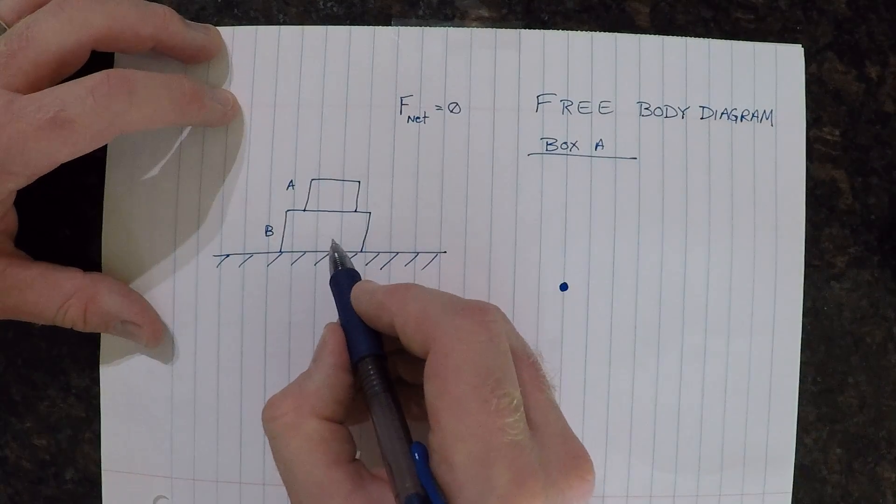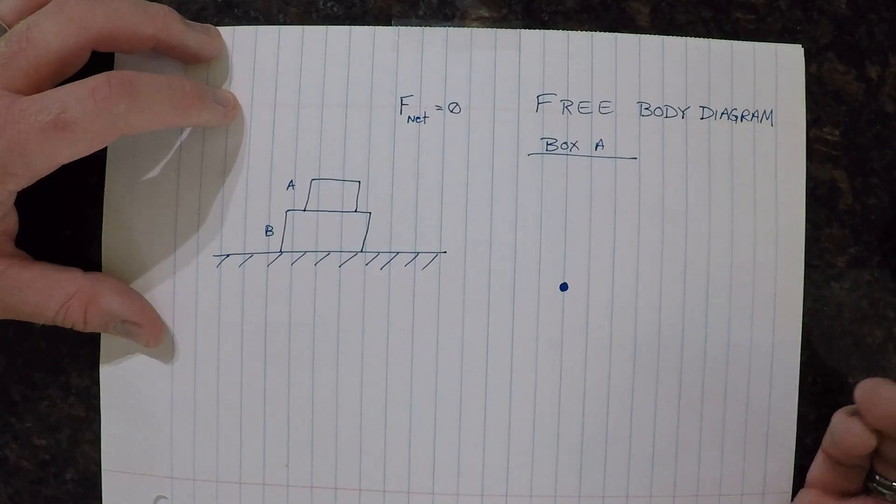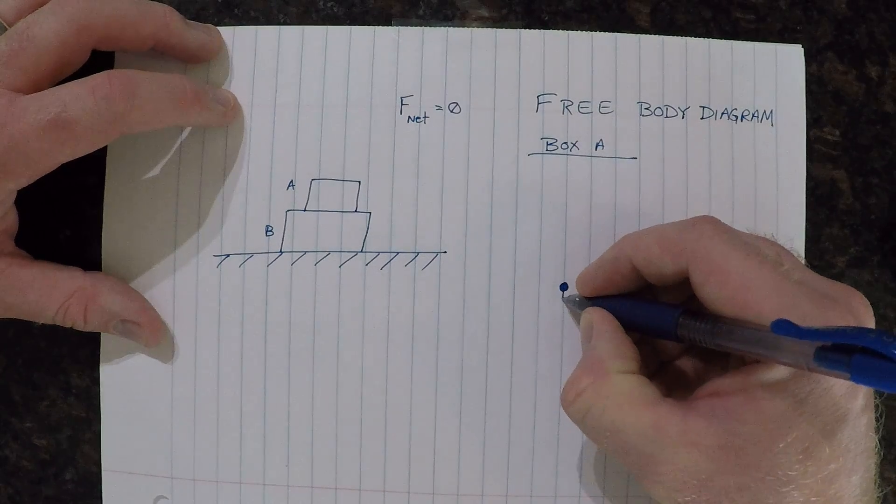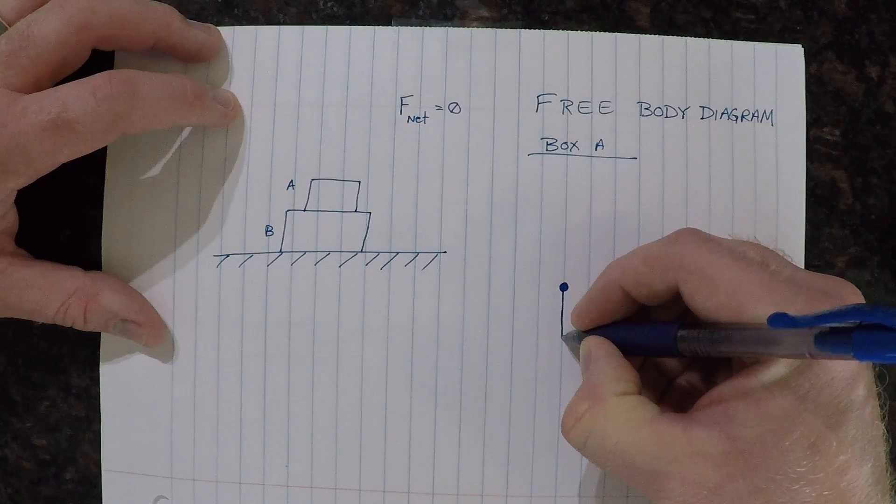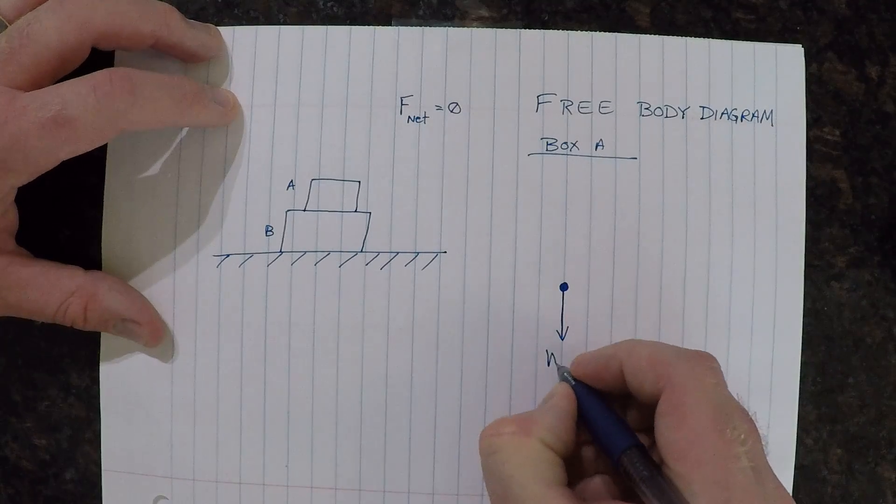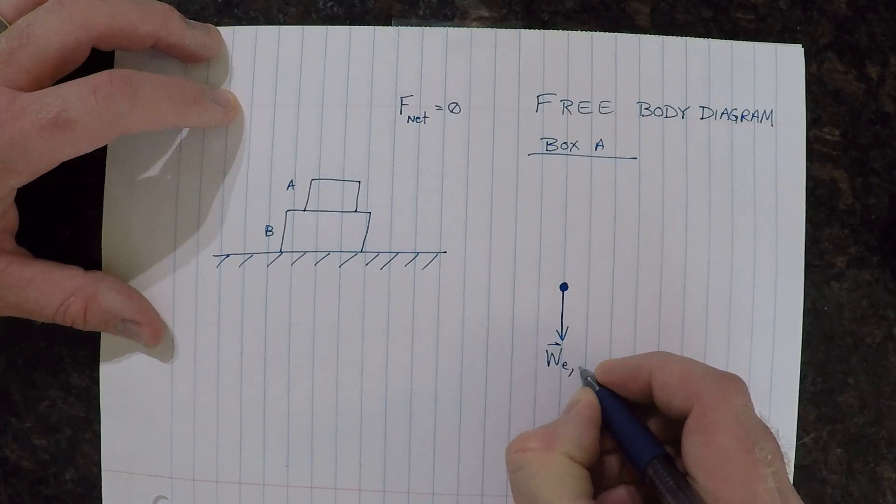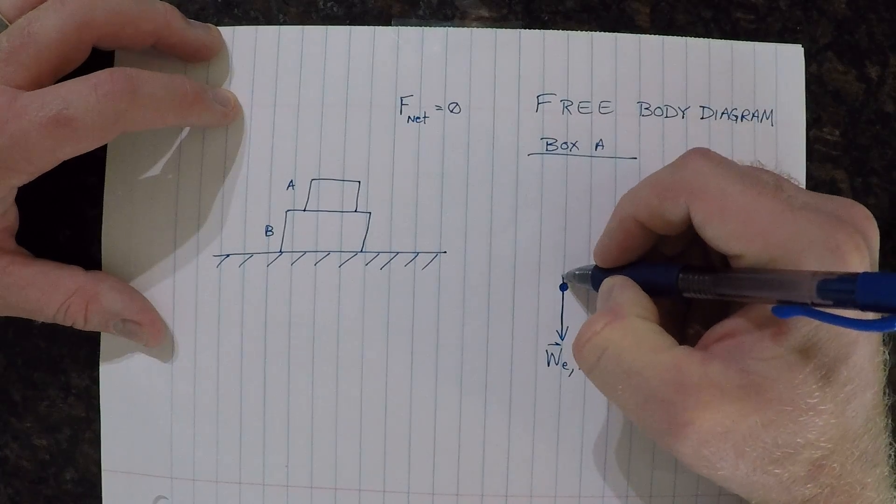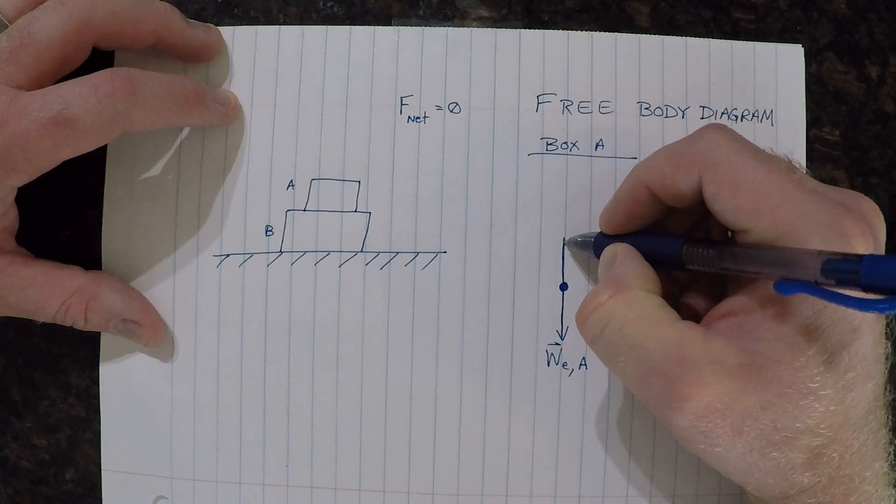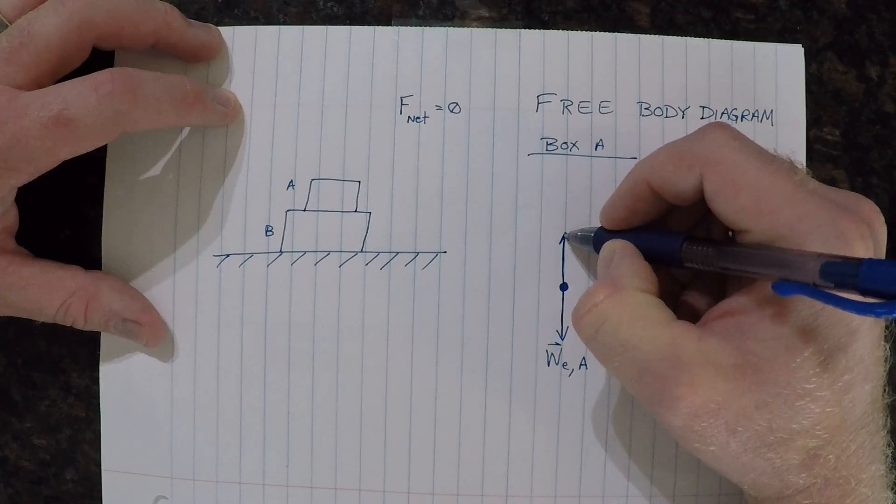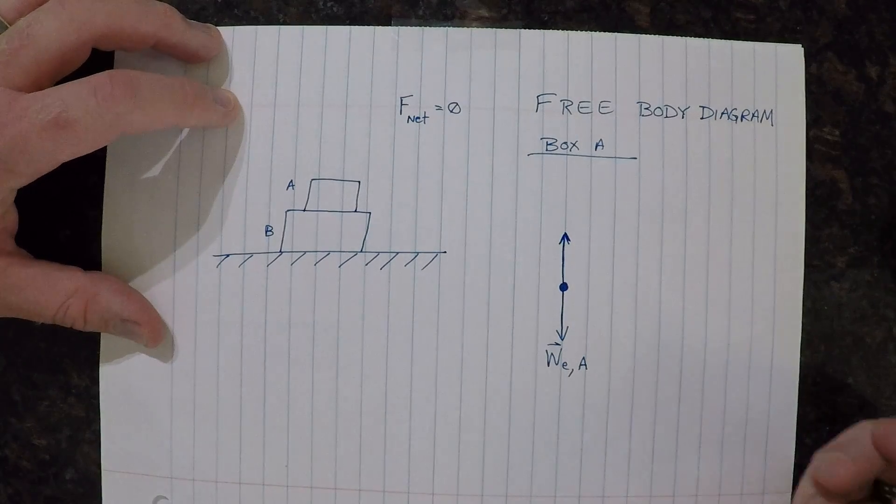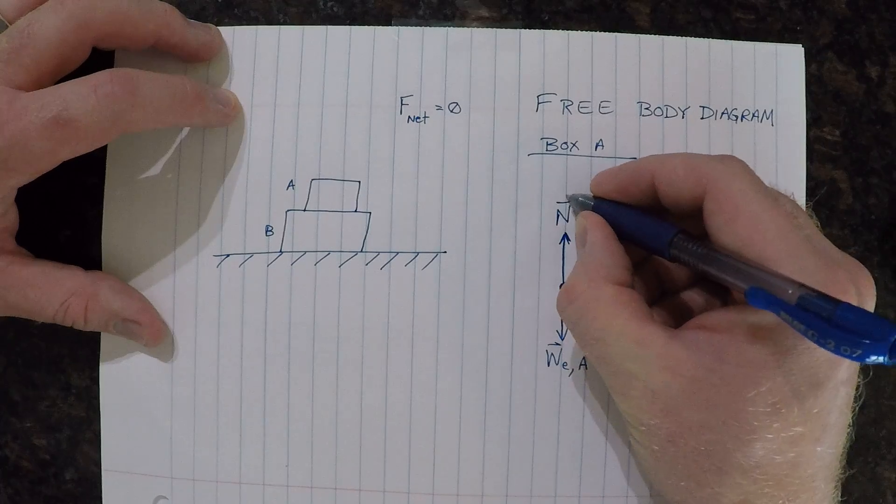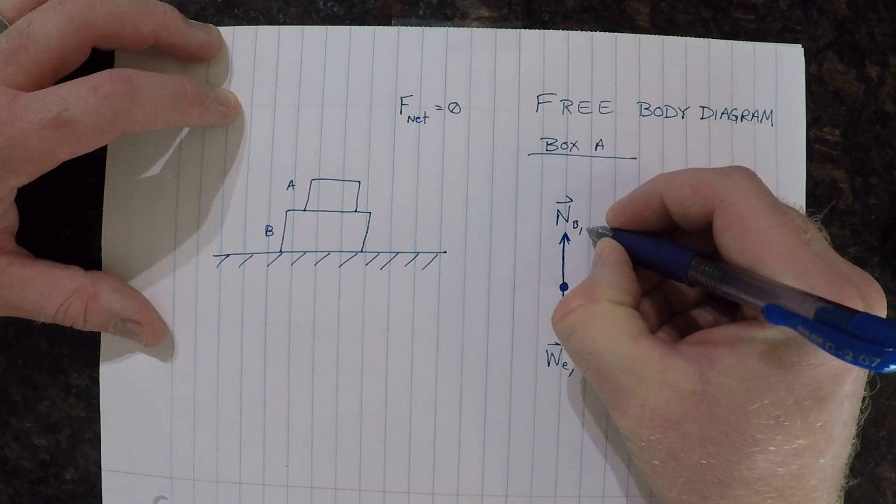So, since it's smaller than box B, I'll assume that it's less massive. And I'll draw a fairly small arrow here to represent the weight of the Earth on box A. Which means that there has to be a normal force of box B pushing up on box A in order to balance that out. And so I'll write this out as normal force of box B on A.